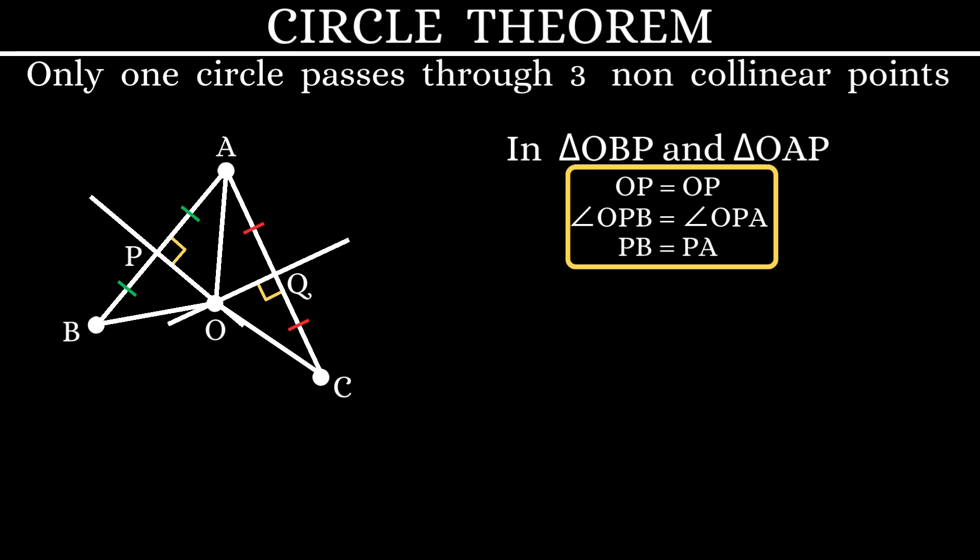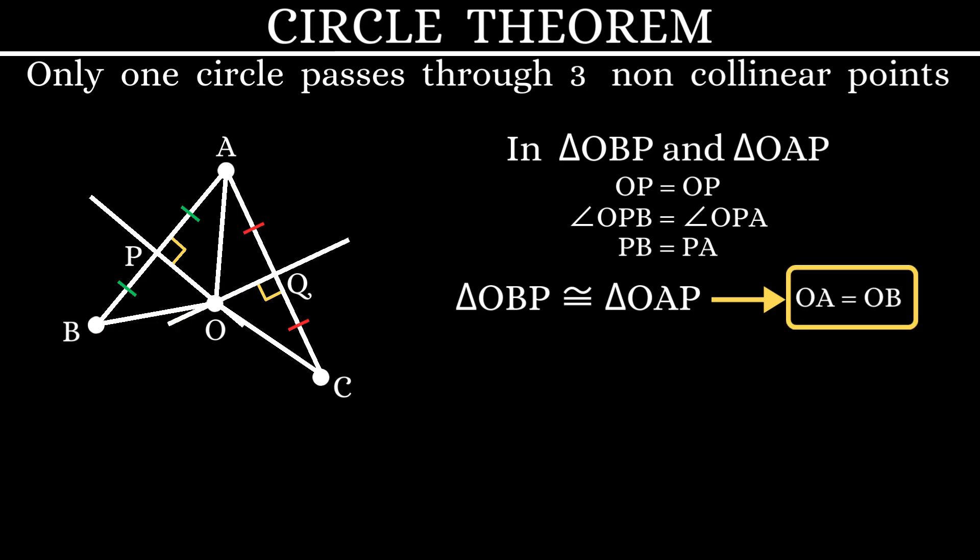So, according to SAS congruence property, we can say that these two triangles are congruent. And that means the corresponding sides OA and OB are both equal.